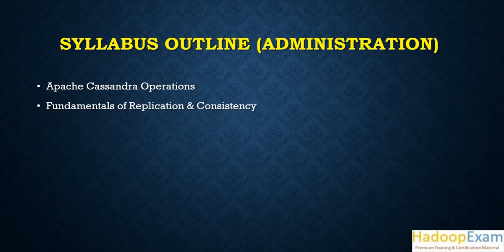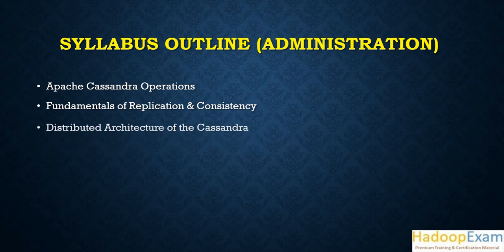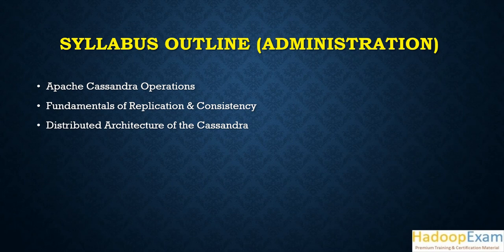One major topic is fundamentals of replication and consistency. There are significant differences compared to non-distributed databases — you need to understand how replication works, what consistency means, and how to tune it. Cassandra is a distributed architecture with a ring of nodes — more than one node in the cluster — so understanding how this distributed system works is essential, including the internal storage engine.